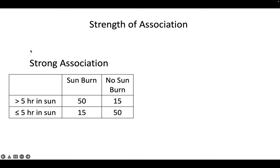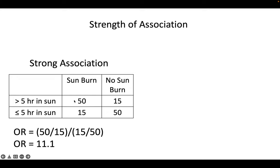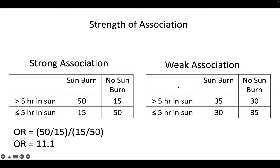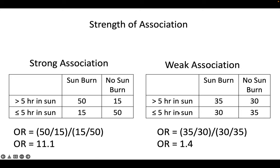Here's a table where sunburn is going to illustrate each of these criteria. We have a 2x2: people who got more than 5 hours of sun versus 5 hours or less, and those who got a sunburn versus those who didn't. With a strong association, we find the odds ratio — odds in high exposure (50 over 15) divided by odds in low exposure (15 over 50) — and we see that if you got more than 5 hours of sun, you're 11 times more likely to have gotten a sunburn. That's good support for a causal relationship. The weaker association comes out to 1.4, so only 40% more likely, which would provide less support if we're unsure of whether it's causal.